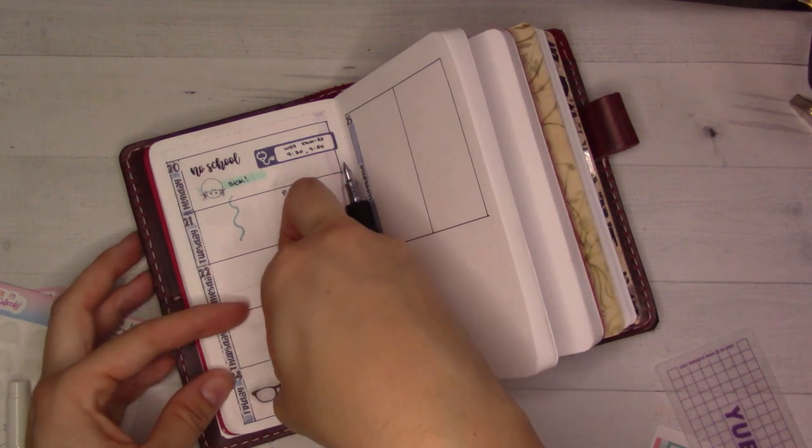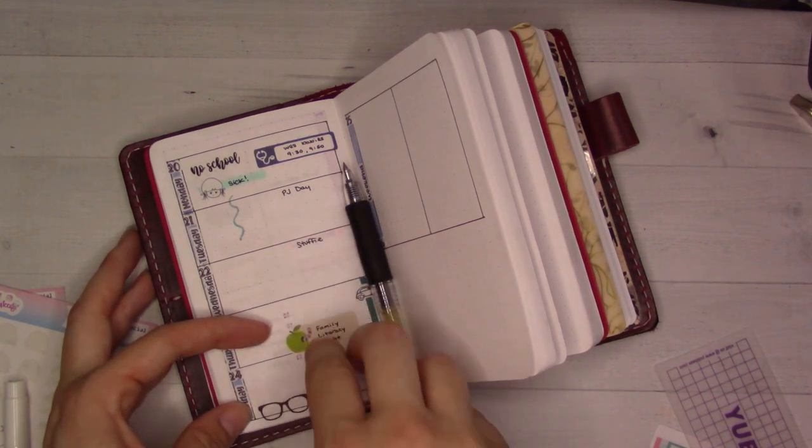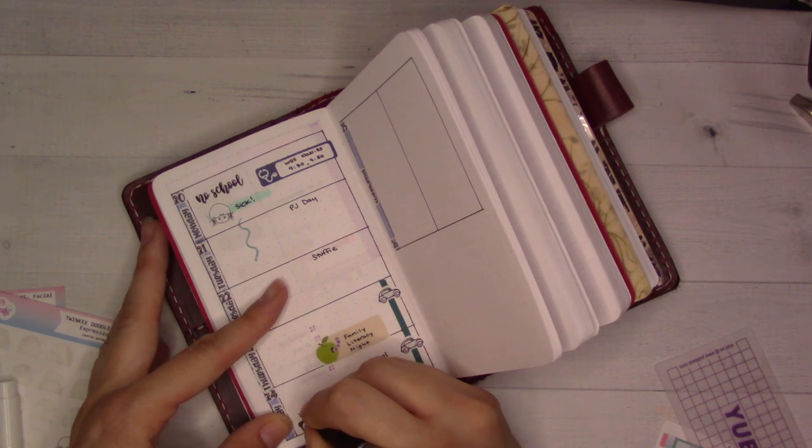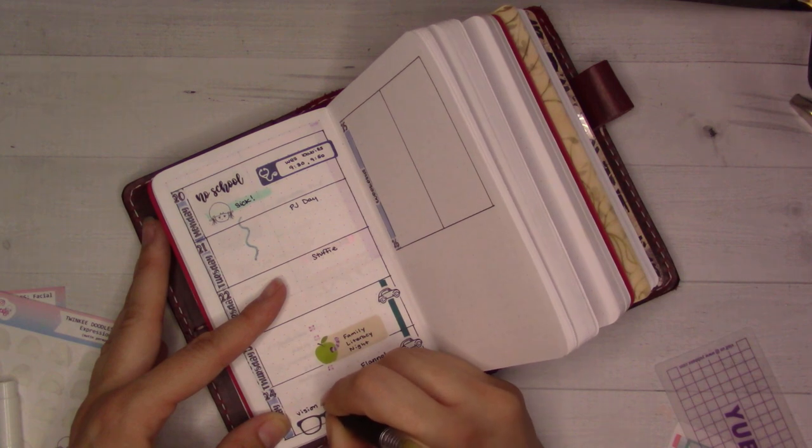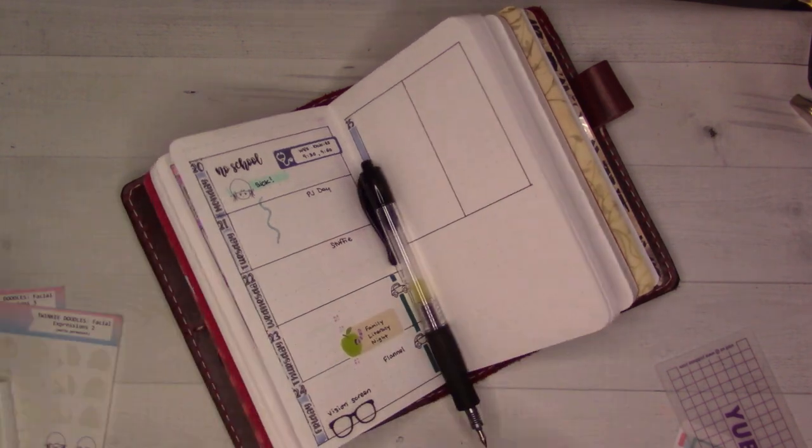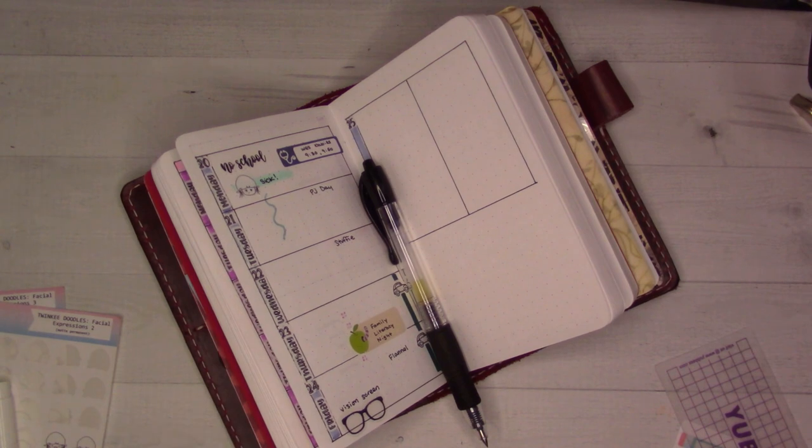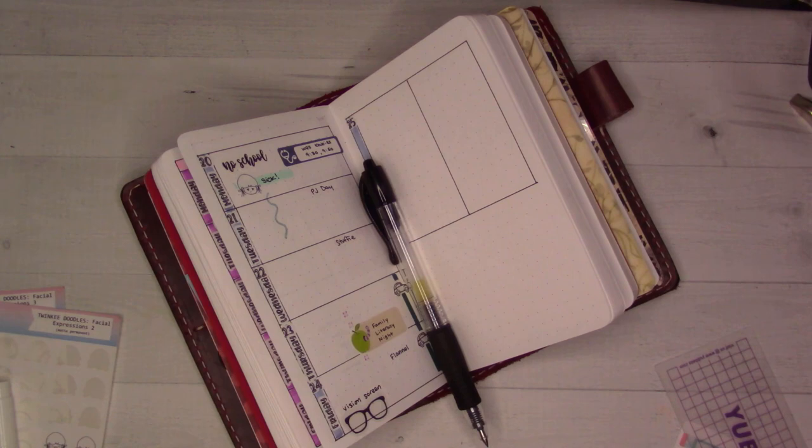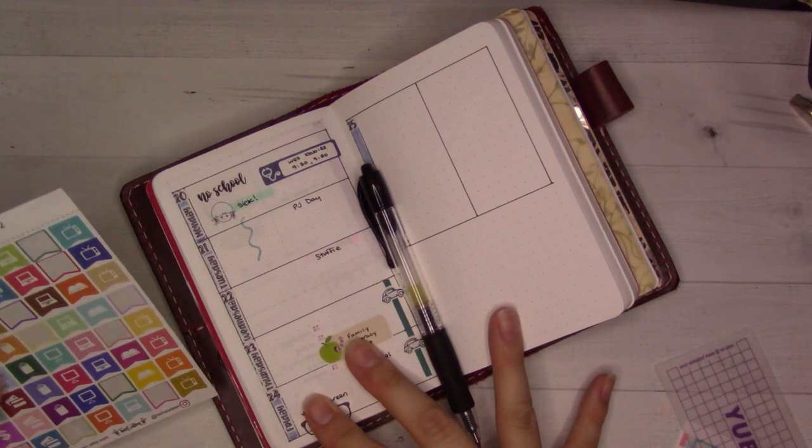All right and then vision screening and I think - oh here I have it right here, I actually have a glasses sticker. I don't actually know if she's getting a vision screening or not. I don't know, it looks like when I looked at the schedule from the state maybe it only happens in kindergarten or maybe it happens in TK I don't know, but I have a sticker that will work for that and it's not like it matters, it's like happening at school.